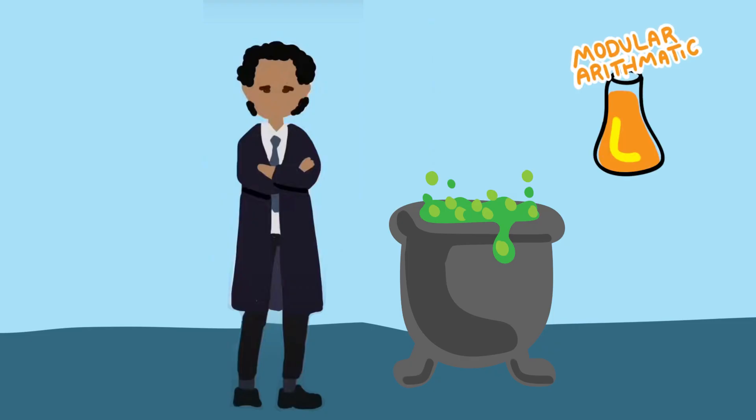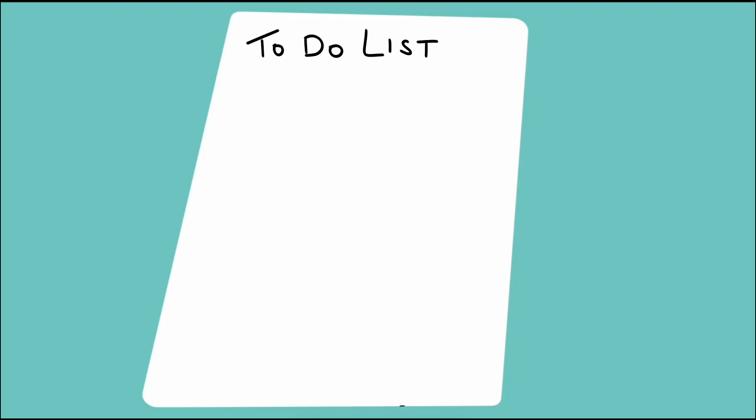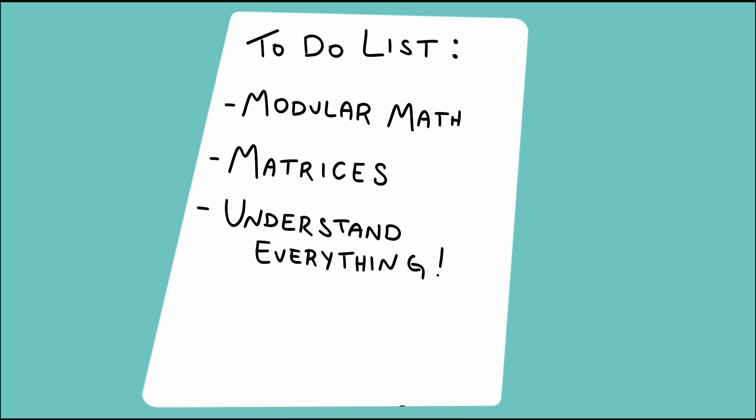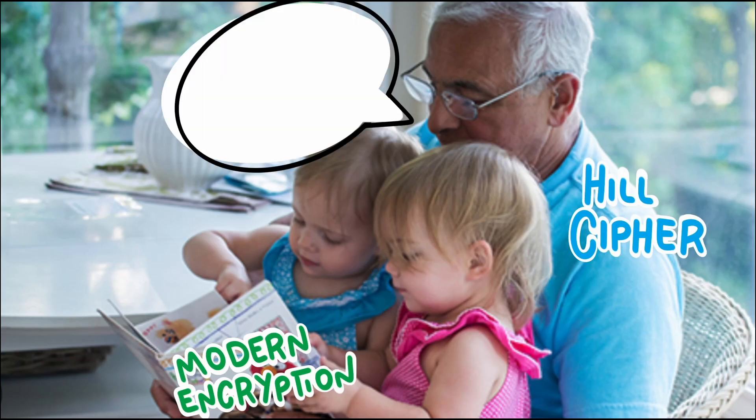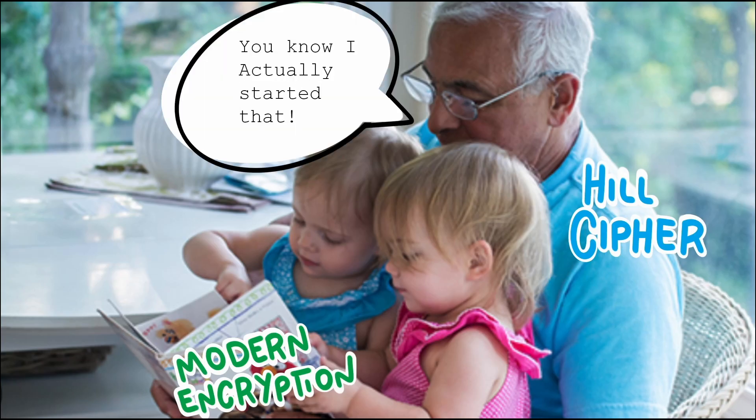But what happens when a mathematician with knowledge of modular arithmetic and linear algebra gets involved in cryptography? In this video, we'll go over the fundamentals of modular mathematics and matrices needed to understand how the Hill cipher, which is not even 100 years old, operates, and how its structure can be seen in encryption systems still in use today.